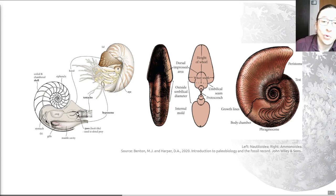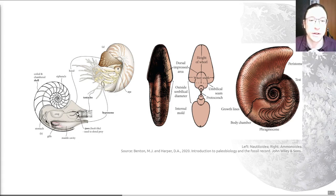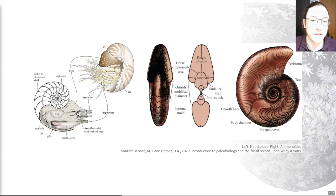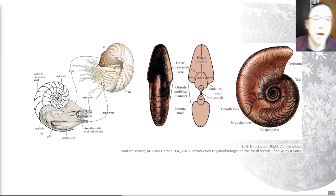Fossil nautiloids developed a wide range of shell morphologies and lifestyles — they were far more diverse or disparate than those nautiloids that remain alive today. On the right we can see the ammonoids. Ammonoids look superficially similar; their shell comprises the original embryonic form of the animal called the protoconch, then the phragmacone.